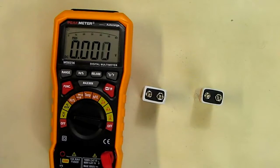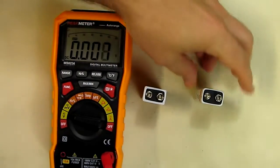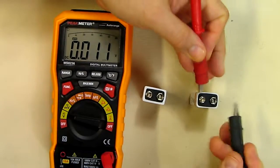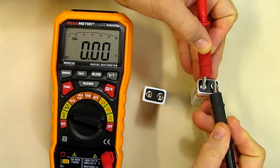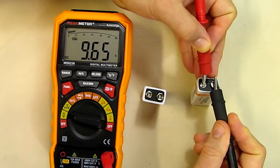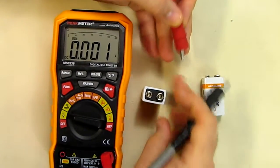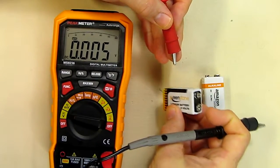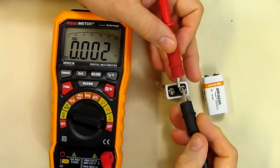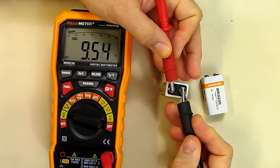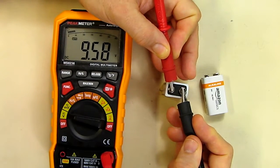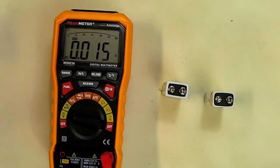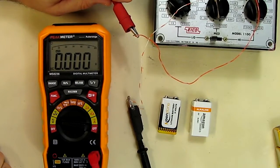I have a multimeter here, we're going to do some voltage testing open circuit. So first we're going to look at the Amazon battery: 9.64. And that's the Amazon battery. Now we're going to look at the Keenstone: 9.57, so they're comparable in open circuit voltage.